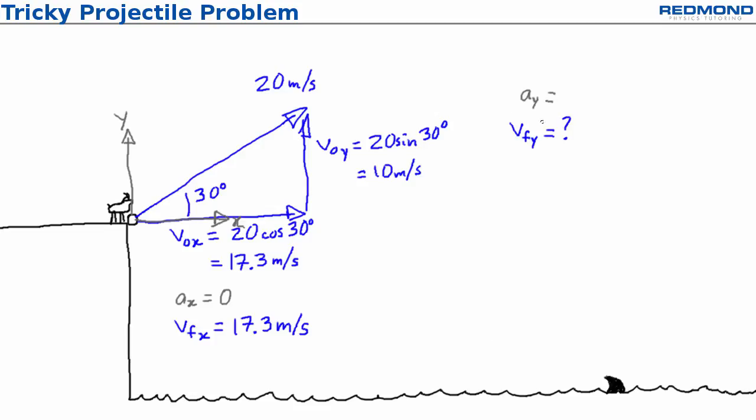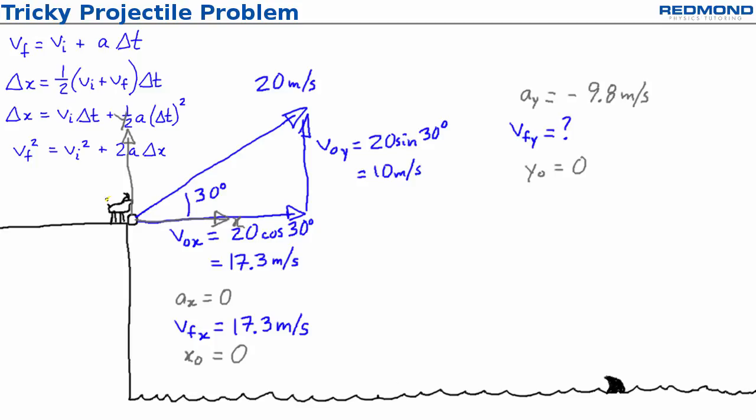For projectile problems, Billy uses the equations for constant acceleration which also include position x and y and time. X initial and y initial are both zero because the origin is where Billy kicked the rock. X final is unknown and y final is negative 100 meters because the water is 100 meters below the cliff. Delta t is unknown. That's the amount of time the rock is in the air.